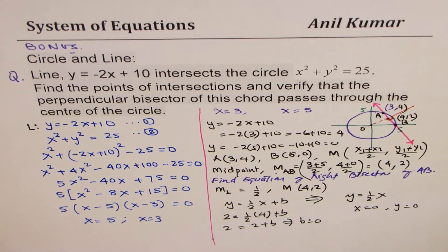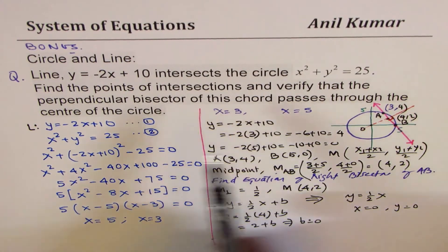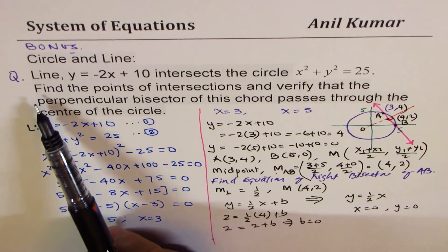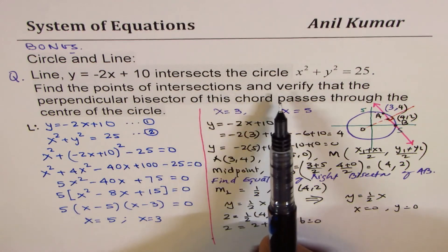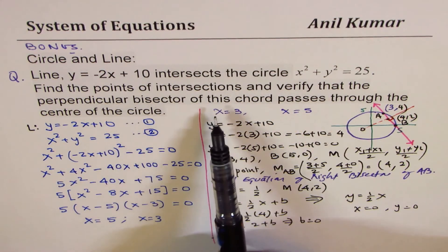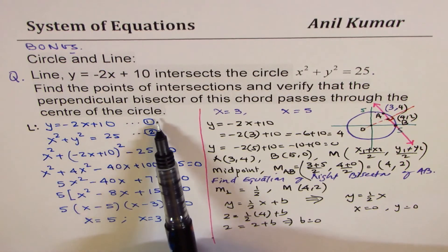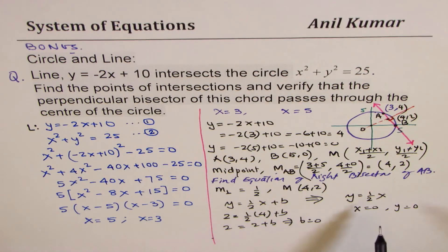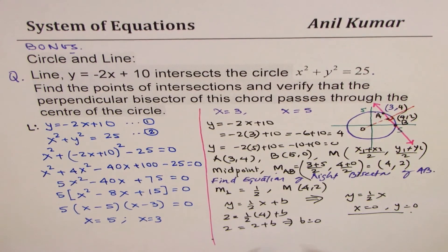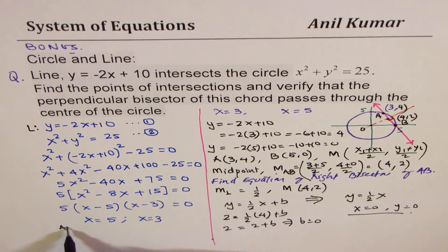The points which we found are truly correct points. Let's read this question once again. It says: Find the points of intersection and verify that the perpendicular bisector of this chord passes through the center of the circle. So center of the circle is 0. So that is how it should be done.